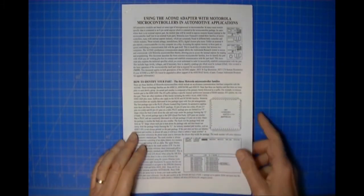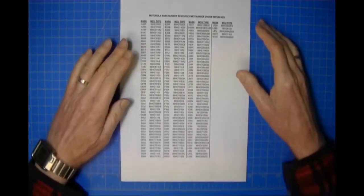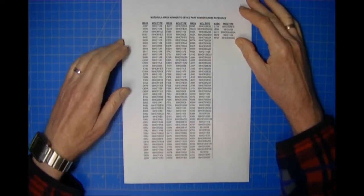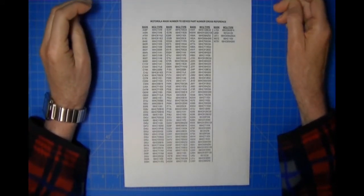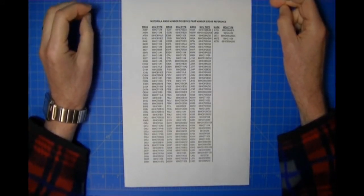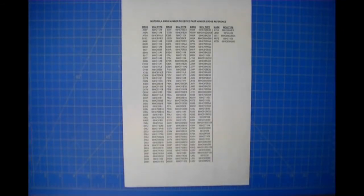This is the document that comes with the ACOM 2 for your reference, and we strongly suggest that you read it. The other document we provide is a list of the Motorola mask set mask numbers to the actual physical part.